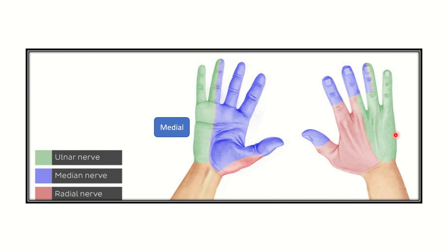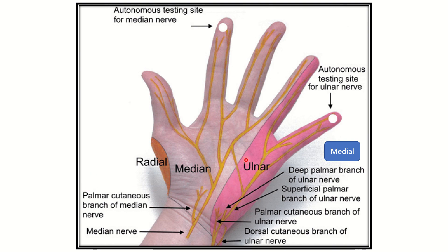In the second picture showing the dorsum of the hand, the medial area is supplied by the ulnar nerve. The lateral area of the dorsum of the hand is supplied by the radial nerve. The lateral three and a half distal fingers and part of the middle finger are supplied by the median nerve.